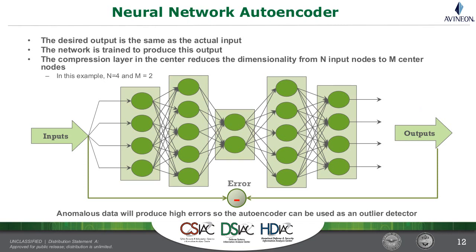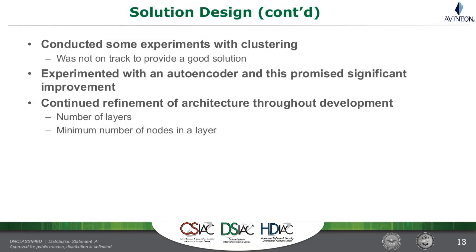We selected the neural network autoencoder as the best solution for this problem. We then refined the architecture by experimenting with how many layers are in the network, how many neurons are in each layer, and most importantly how many neurons are in the compression layer, measuring performance throughout.